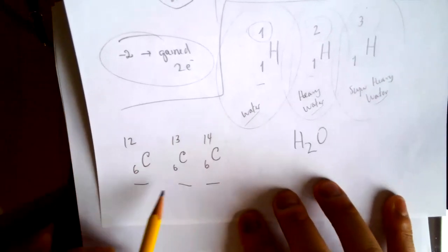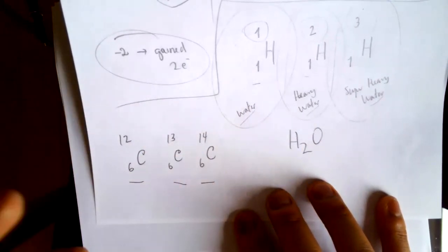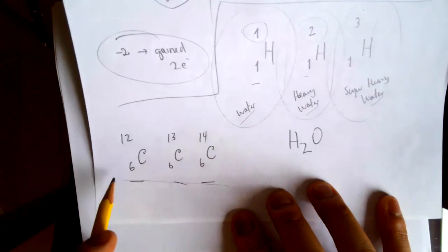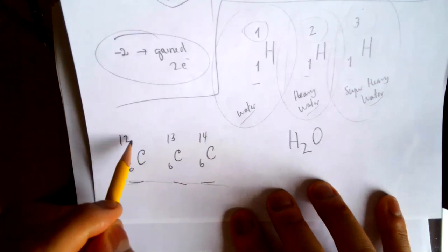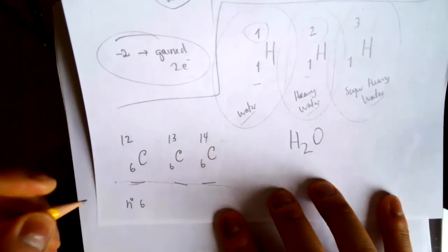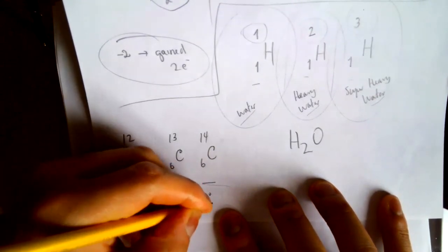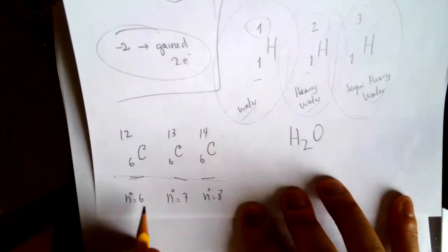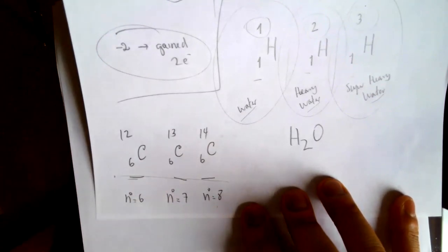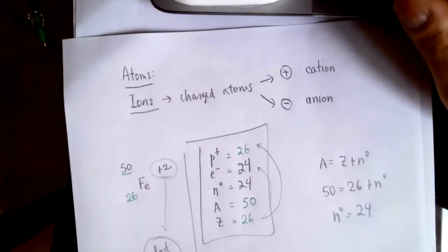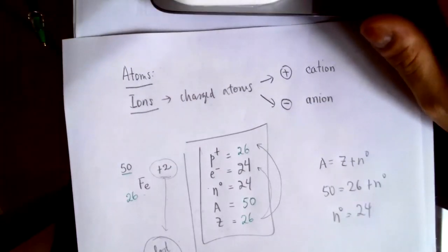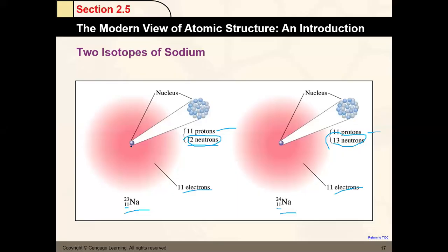Another example of isotopes: carbon has three — carbon-12, carbon-13, and carbon-14. Some elements have only two isotopes, some have six. Carbon has three. Each has a different number of neutrons: 6, 7, and 8 neutrons respectively. The number of neutrons changes just by units — you should never expect a difference of 10 neutrons between isotopes. They are very close, differing by only one or a couple of units.